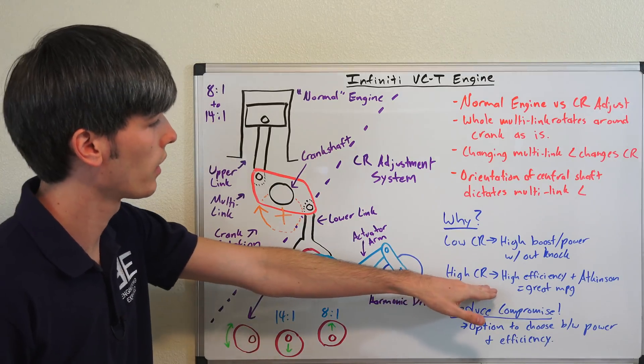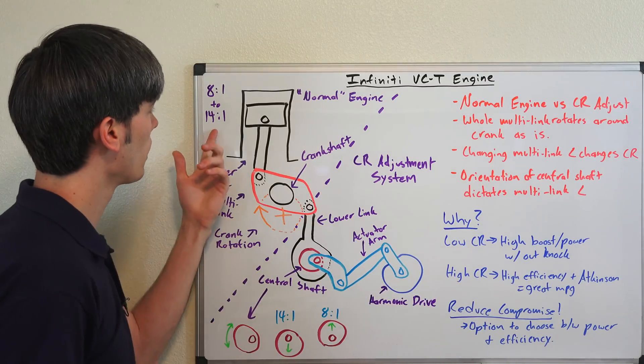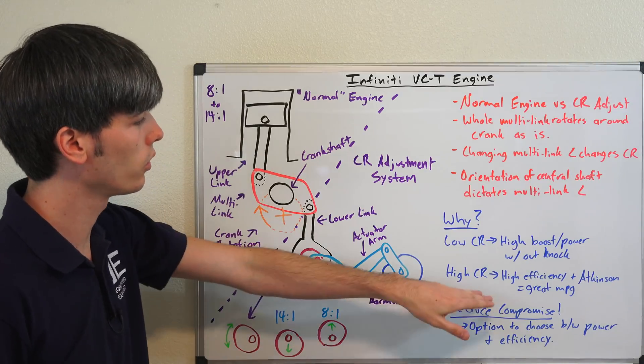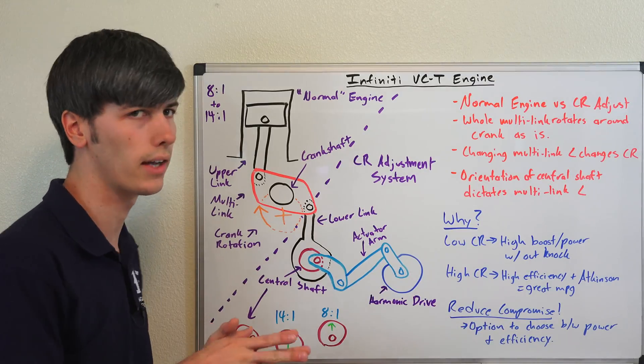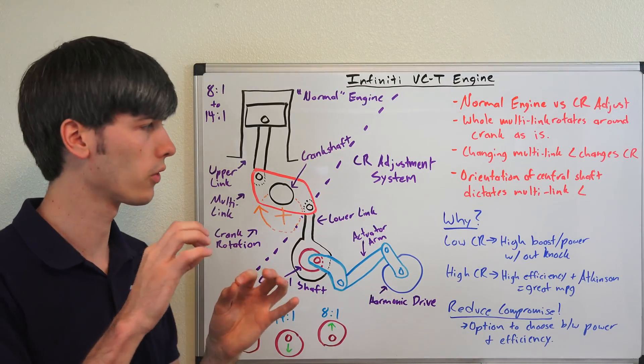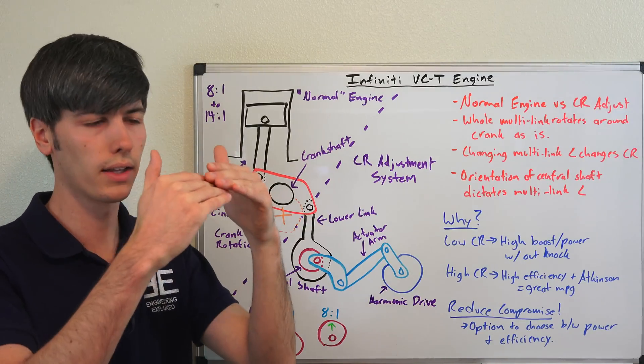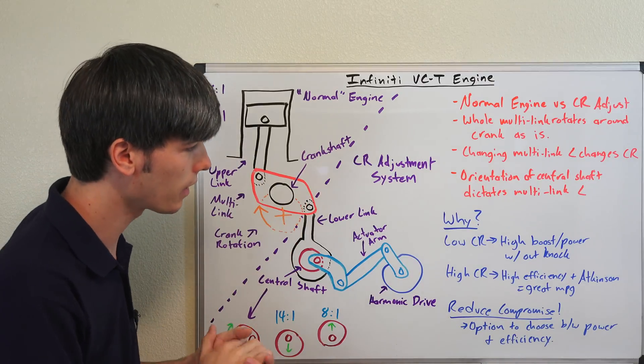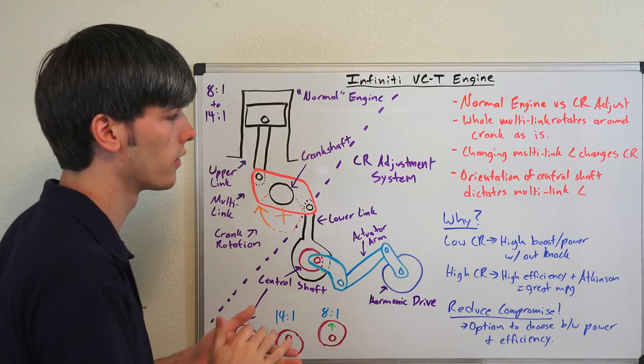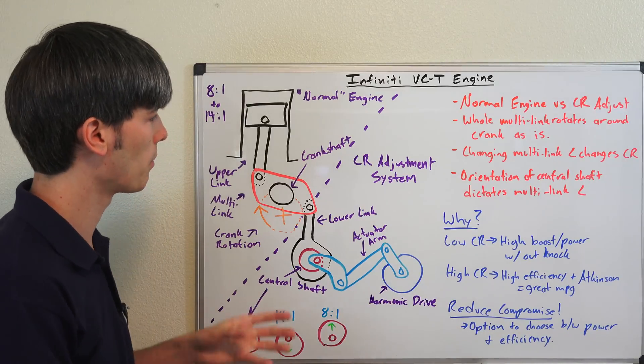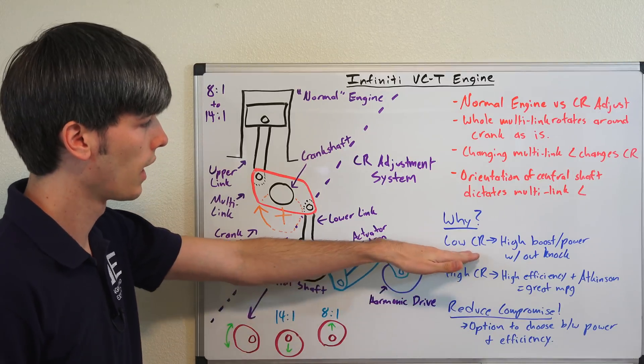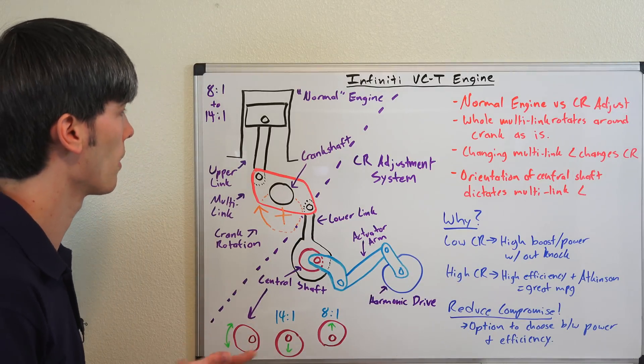Then you can pump it up to that 14 to 1, get that really high efficiency. Not only does 14 to 1 have a higher thermal efficiency, but they've used this in combination with the Atkinson cycle, so they're using variable valve timing to leave those intake valves open for a short duration during that compression stroke, and that improves the efficiency. I have a whole other video explaining how that Atkinson cycle works, if you're interested, but basically what they're doing is giving you really good efficiency in one operating condition, and lots of power in the other operating condition.